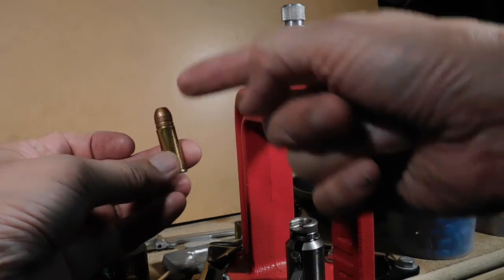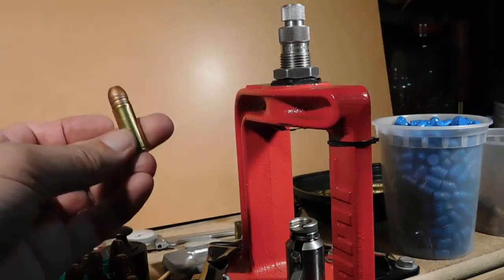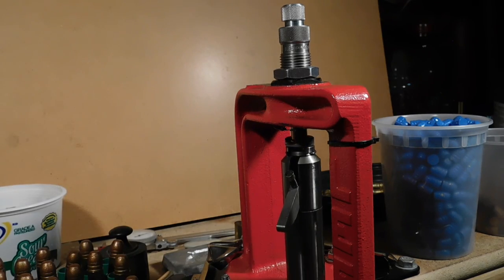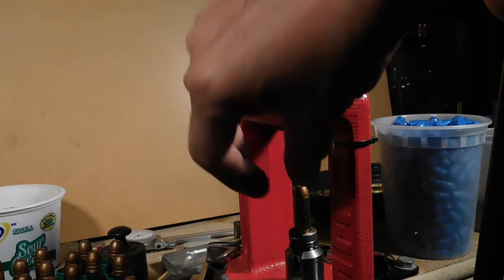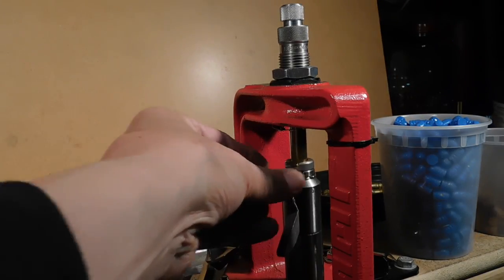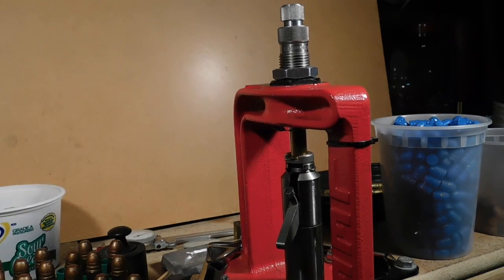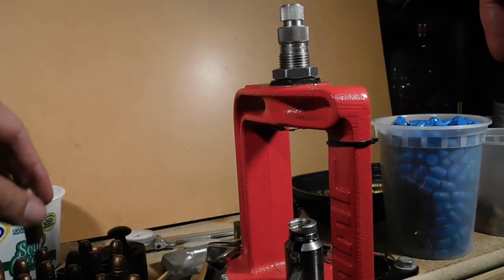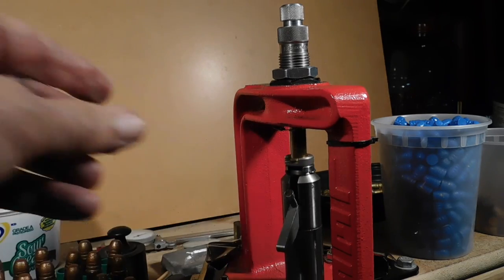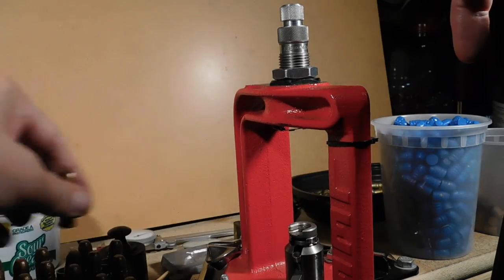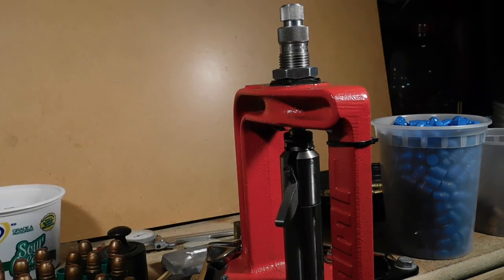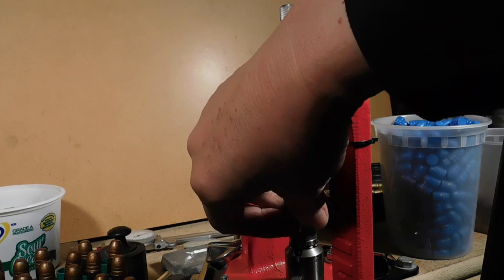Now we take a case that has a bullet that's been placed on the mouth flared case, and we'll seat the bullet right to the crimping groove. And we'll just keep on doing that until we've got the twenty-three seated, as you see here. We'll do the rest of them off camera.